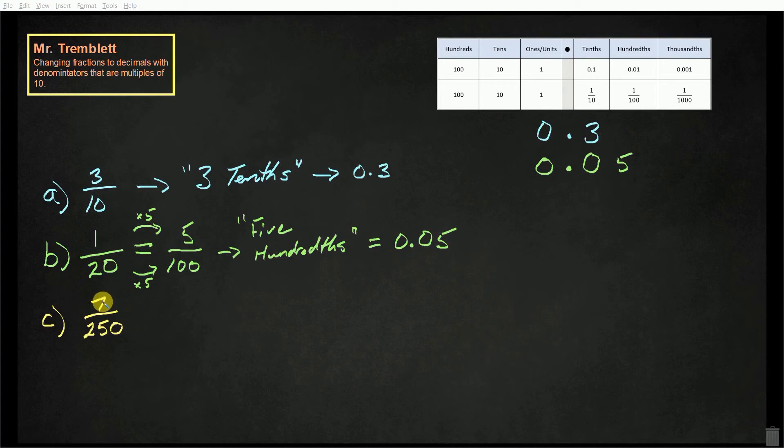We're looking at 7 two hundred and fiftieths. We're going to write it as an equivalent fraction where the denominator is a multiple of 10.